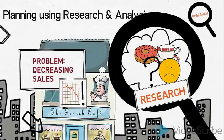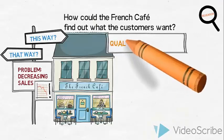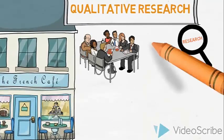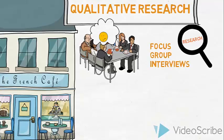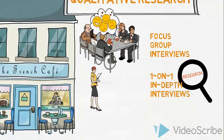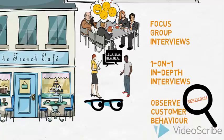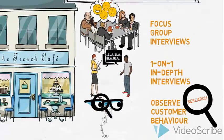Therefore, he has decided to do some research. So how could the French Café find out what the customers want? Let us introduce a few types of qualitative research. They could invite a group of customers in for a focus group interview — a discussion with the customers about their experiences, thoughts and feelings about the French Café. They could also perform in-depth interviews on a one-on-one basis rather than in groups. They could also observe how customers behave when visiting the café, interpreting facial expressions, actions and body language, which might uncover elements of satisfaction or dissatisfaction.